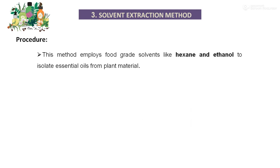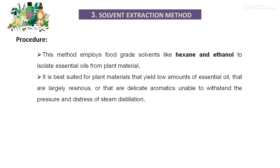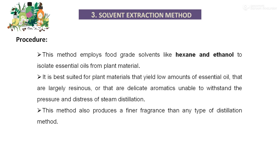In solvent extraction, we use solvent materials like hexane and ethanol. This should be a food grade solvent. It is best suited for plant material that yields low amounts of essential oil, that is largely resinous, or that has delicate aromatics unable to withstand the pressure and distress of steam distillation. This method also produces a finer fragrance than any type of distillation method.